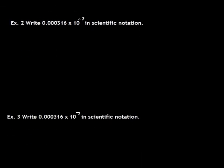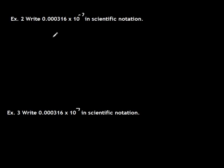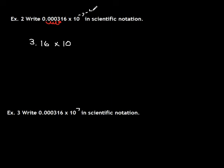Let's try another one — this one's a little tricky. We want to write this one in scientific notation, and it already looks kind of like it's in scientific notation except the decimal point isn't between the first and second non-zero numbers. So we want our decimal point to end up right here, and we have to move it over 4 places to the right to get it into standard scientific notation. That gives us 3.16. Remember, when we move it to the right we subtract, so we're going to subtract 4 from the 7 that's already there — giving us 3.16 times 10 to the negative 11.